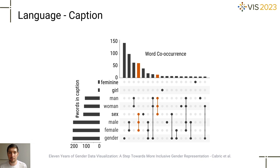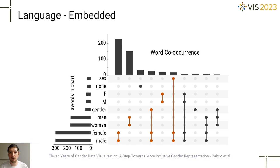For text embedded in charts, the language most often used is pairs or triplets of words. Researchers prefer to use the female-male pair rather than the woman-man pair. A detailed analysis by research area or time period is provided in the paper.